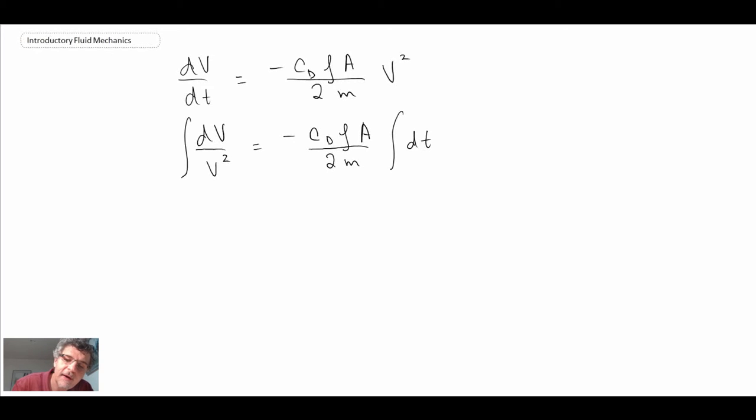And the limits of integration: time, we're trying to find velocity as a function of time. And we were told the velocity at t equals zero. So we're going from zero to some arbitrary point in time. And the velocity is going from v naught to v, where v is the velocity at some point in time, which is what we're trying to solve.